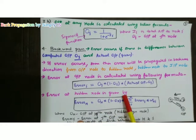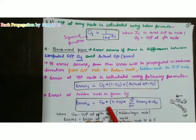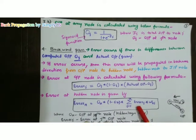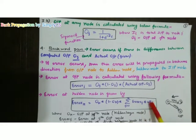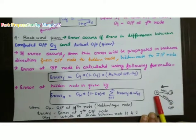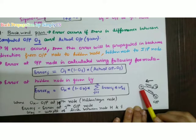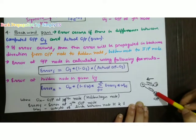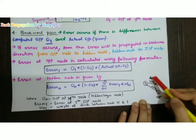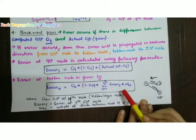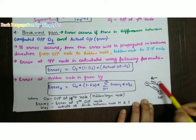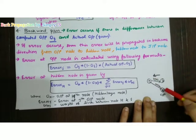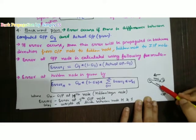Next, we calculate the error at hidden nodes. The formula is: error at hidden node h equals O_H into (1 minus O_H) into the summation of (error at j multiplied by W_Hj). Looking at the snapshot: if I calculate the error for the hth hidden node, I use error at J1 multiplied by W_HJ1 plus error at J2 multiplied by W_HJ2.